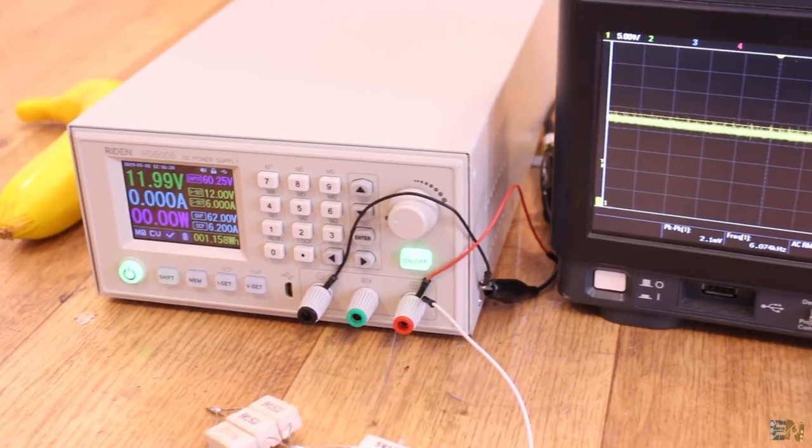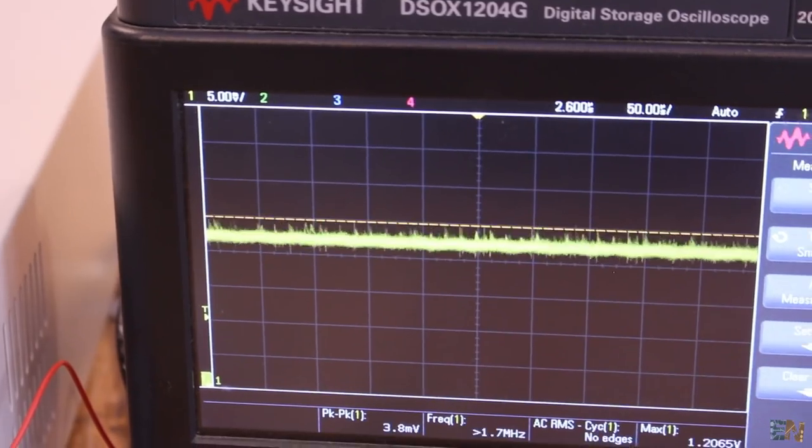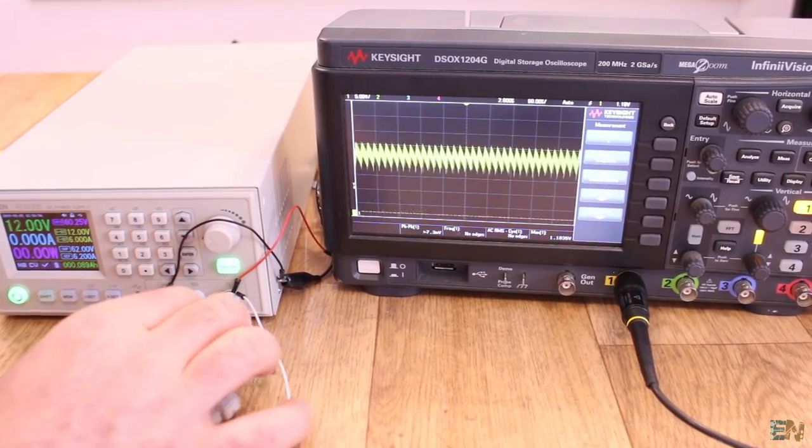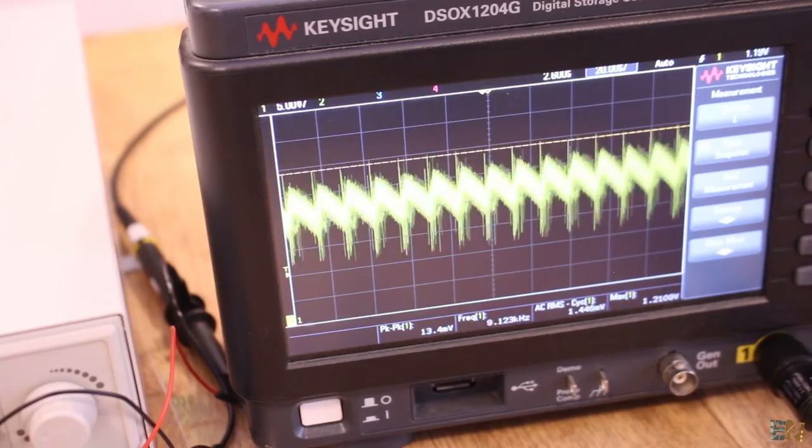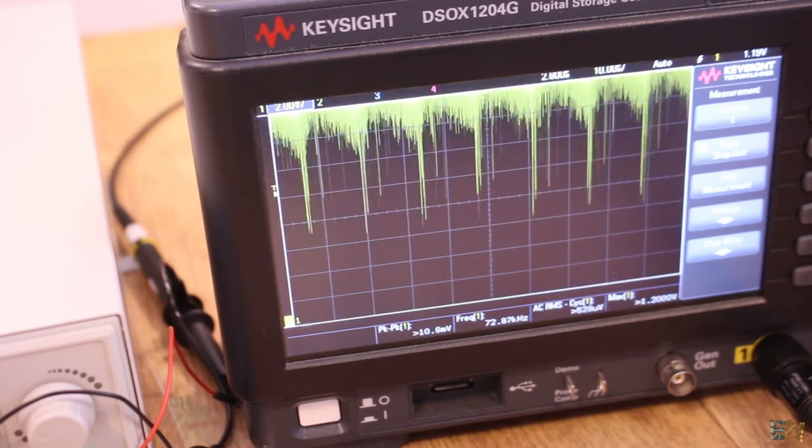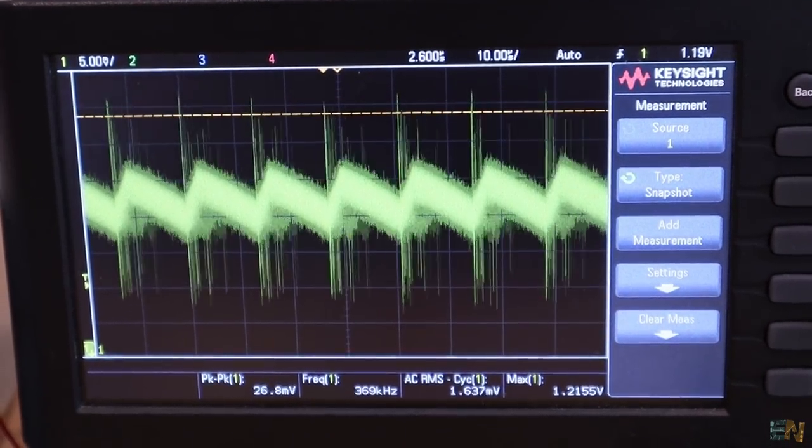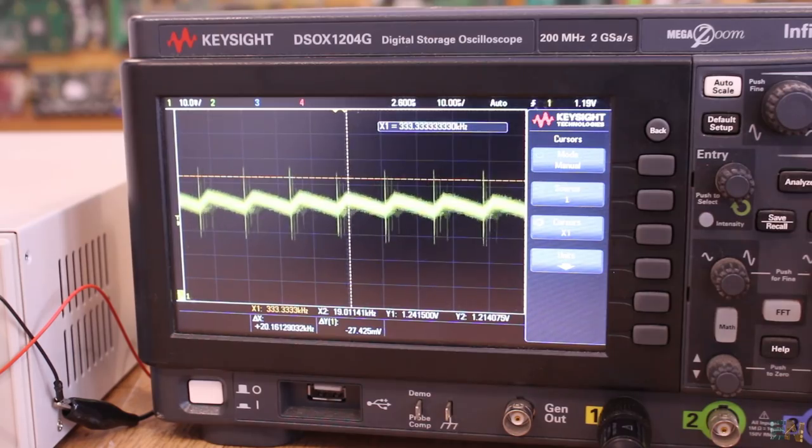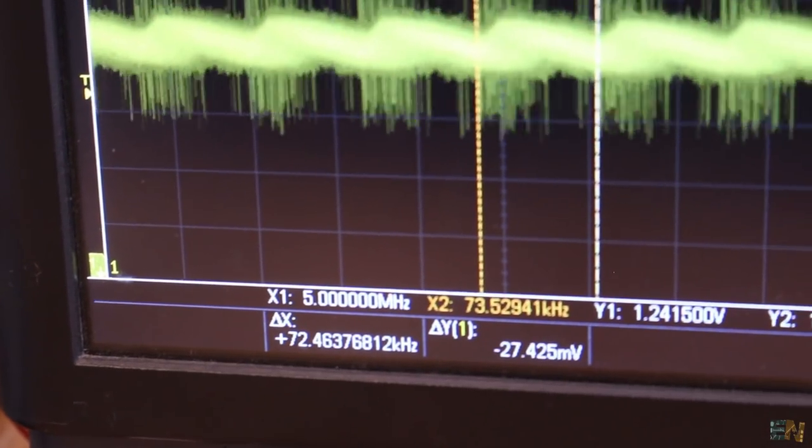Ok, now here we have the ripple with no load. As you can see, at a division of 5mV, we almost have no ripple. Now I add the load and we can see the switching ripple. As you can see, the peak-to-peak value is around 25mV and an AC RMS value of 1.6mV, which I think is more than good for a switch power supply this cheap. Using the cursors, I found that the switching frequency is around 72kHz. So that's it for the tests.